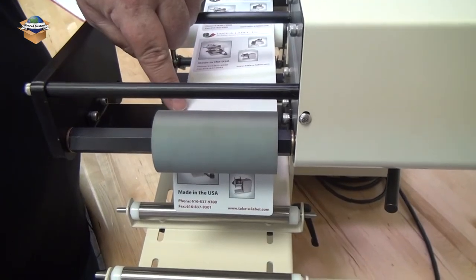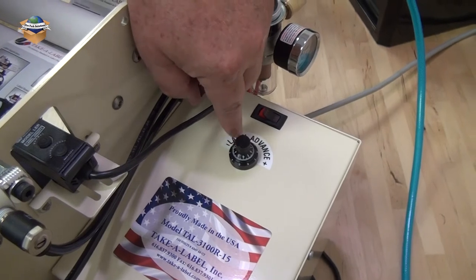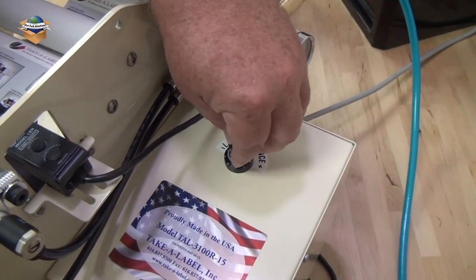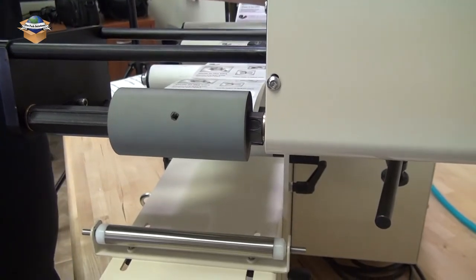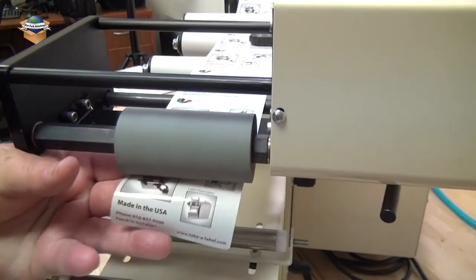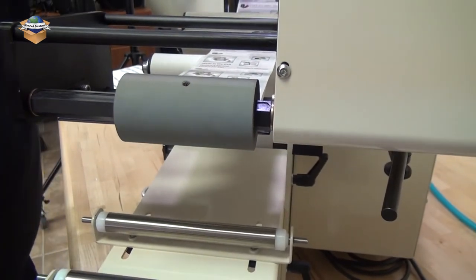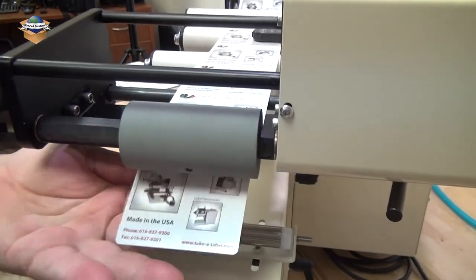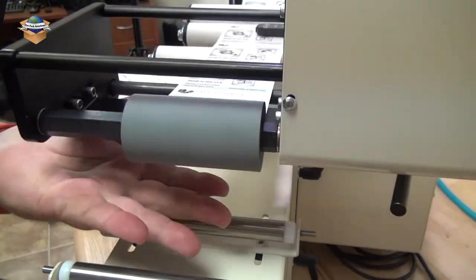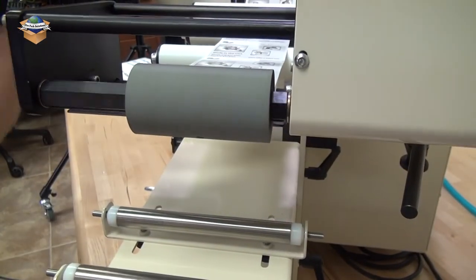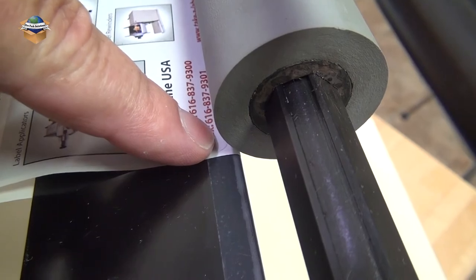What we're looking for now is to put the gap at the edge of the peel plate. We'll need to advance the label and we'll need to turn this and test it. We went too far so we'll back it down. Test again. Almost. That's got it. Now we have the gap at the edge of the peel plate.